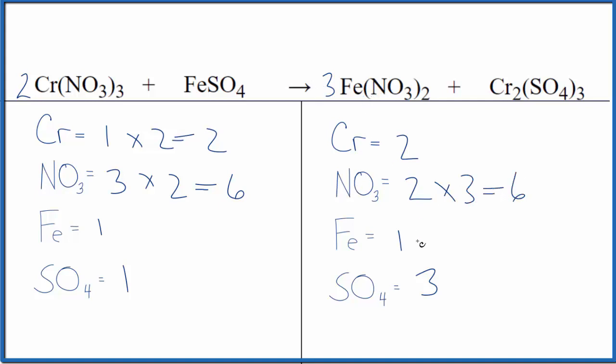And then the one iron times three gives us three of those. Might as well put a three in front of the iron two sulfate. Because one times three, three iron atoms. And then the one sulfate times three gives us three of those. We're done. This equation is balanced.